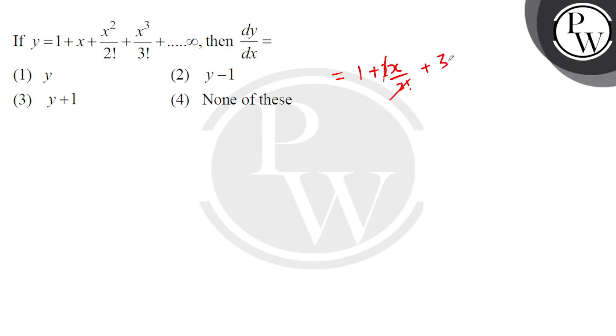Then x cubed, 3x squared upon 3 factorial. Now dot dot and so on.